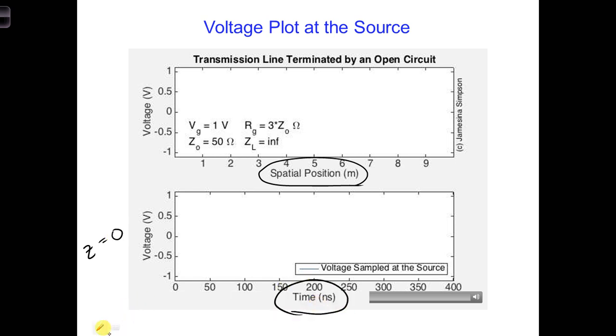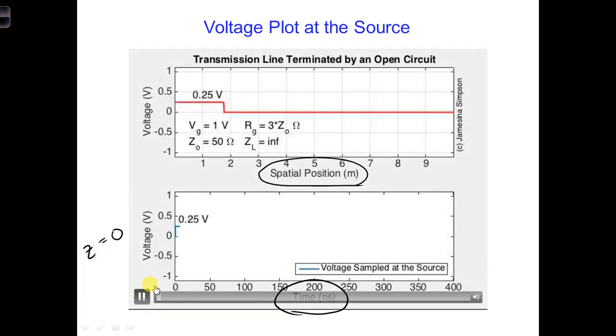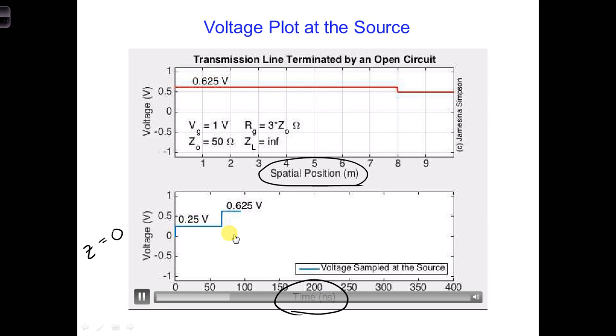Let's see what happens when we play this video. You can see the voltage at Z equals zero stays 0.25 volts until right there, right when the V1 minus wave reaches the generator.